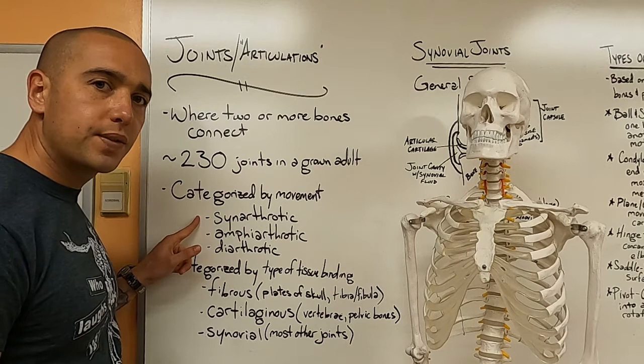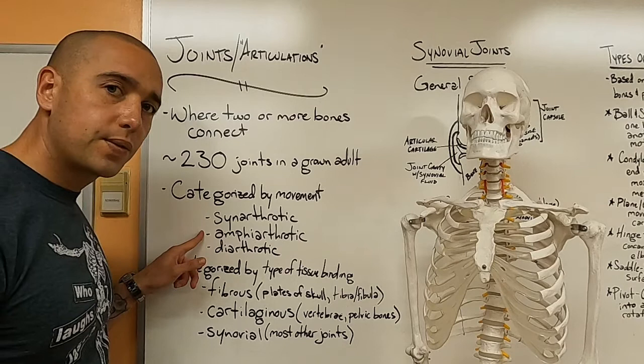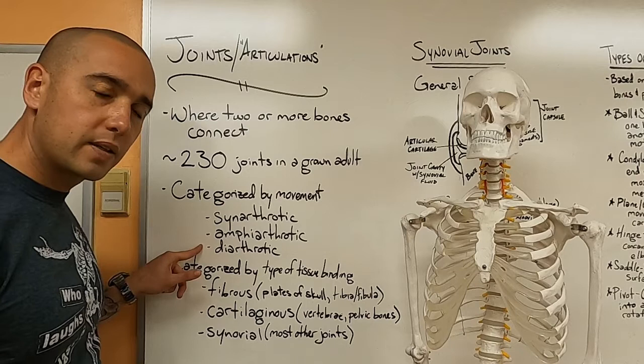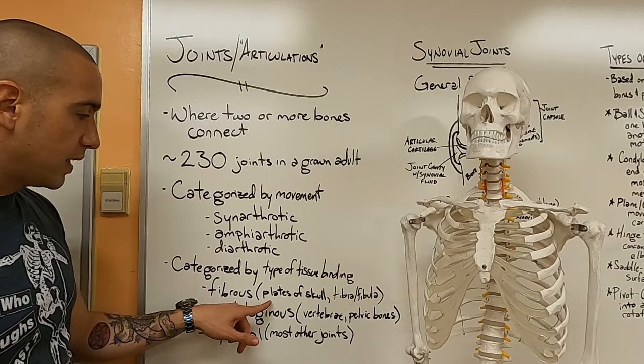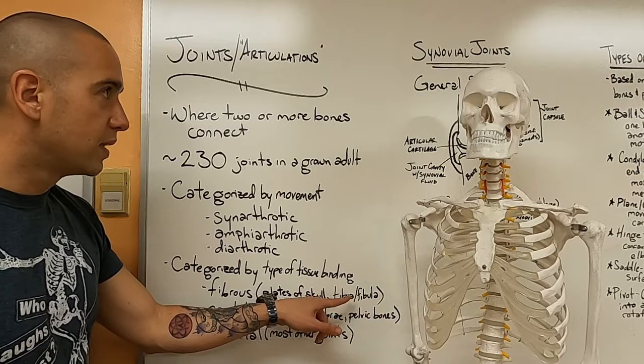Synarthrotic joints are ones that have little to no motion. Amphiarthrotic joints are ones that have a medium degree of motion. And diarthrotic are joints that have full motion. You're most likely to hear this type of category though, that there are fibrous joints, which are things like the plates of the skull or where the tibia and fibula are connected at their distal end.